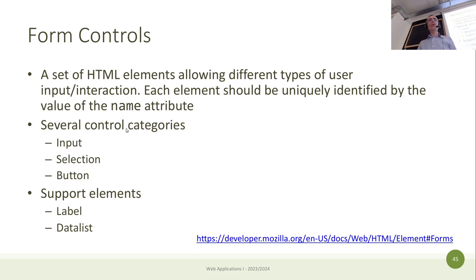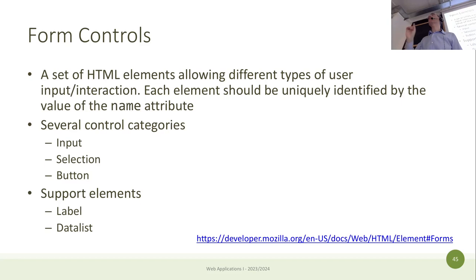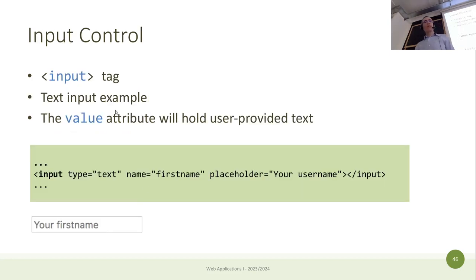We have different control categories. The most common one is the input. Then we have different ways of inputting - like selections and buttons. Buttons don't input textual information, but give you the possibility to send one bit of information: send it to the server, or 'I'm finished', or 'I'd like to reset something'. The first control is the input tag. You need to specify a type - there are many different types. The simplest one is text. You assign it a name, and then you can add placeholder and other additional attributes.